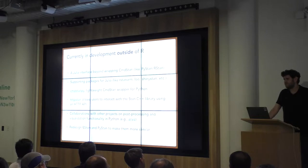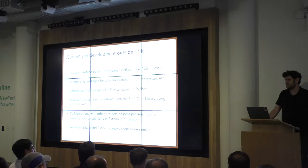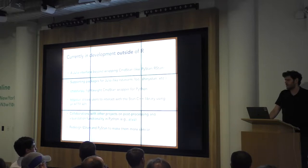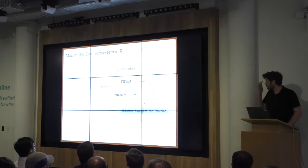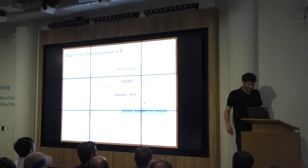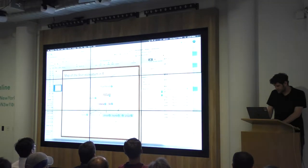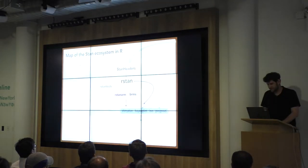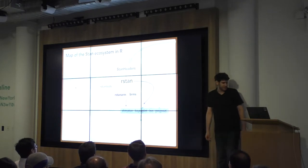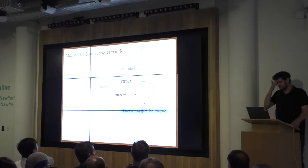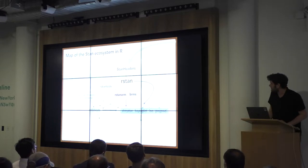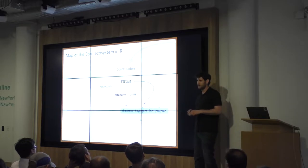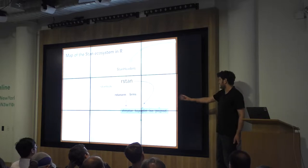By far the most work that's been done has been in R, partially because those of us heavily involved with Stan are also R users. So we've first started implementing things in R, and we've slowly gotten more people involved from Python and Julia. This is a not entirely coherent partial map of what I'm calling the Stan ecosystem in R, plus extensions. It's contained to stuff being done by the Stan development team, but there are a lot of other contributors too.